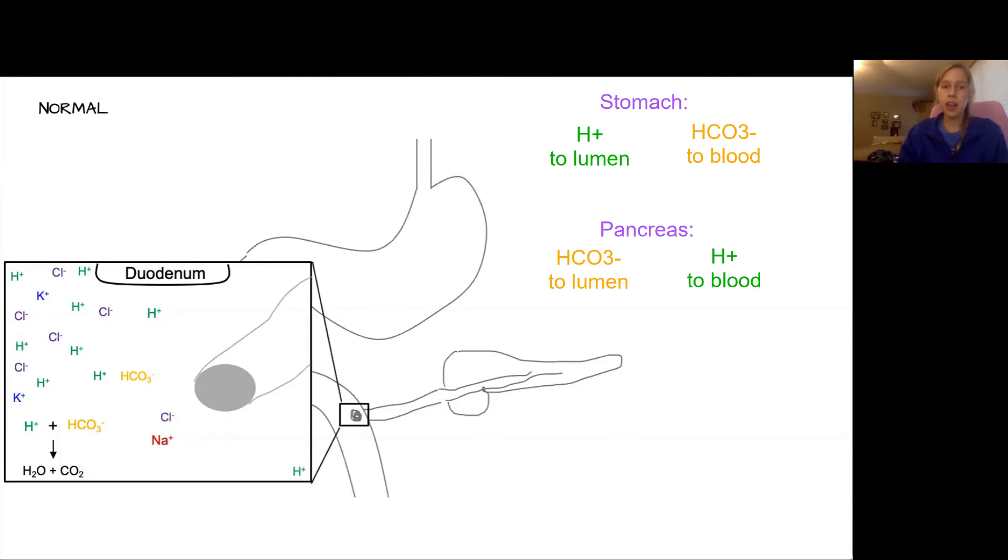So, the hydrogen ion from the stomach lumen is neutralized by the bicarbonate from the pancreatic lumen, and the bicarbonate that was sent into the blood by the stomach is neutralized by the hydrogen ion that is pumped into the blood from the pancreas.